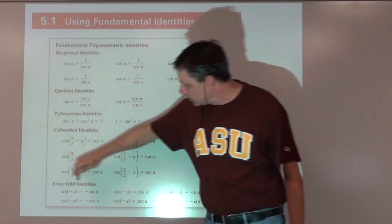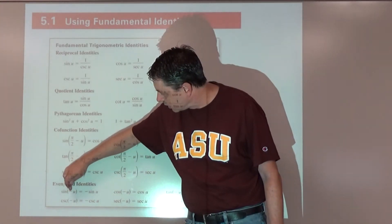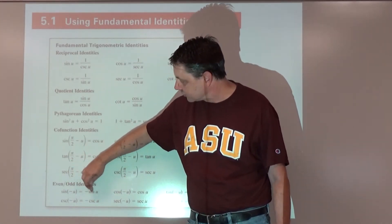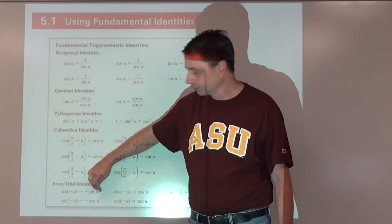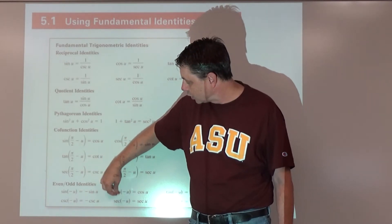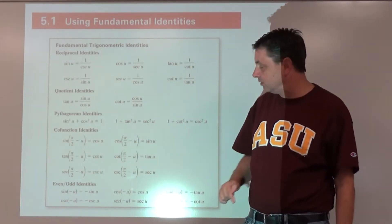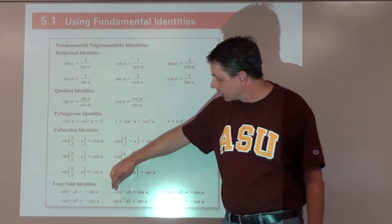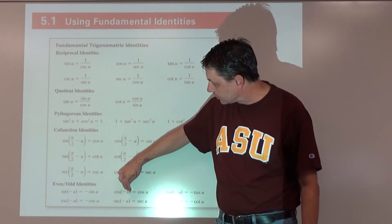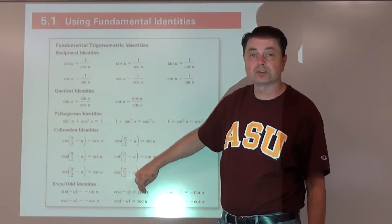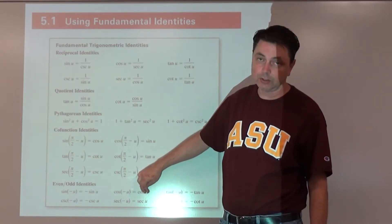Because sine is odd, sine of the opposite of u equals the opposite of sine of u. Cosine and secant are even functions, so cosine of the opposite of u is the same as cosine of u.